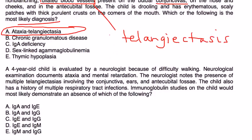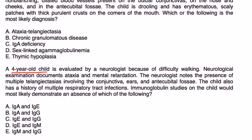And then finally, a four-year-old child is evaluated by a neurologist because of difficulty walking. Neurologic exam documents ataxia, mental retardation. The neurologist notes the presence of multiple telangiectasias involving the conjunctiva, ears, and antecubital fossa. The child also has a history of multiple respiratory tract infections. Immunoglobulin studies on the child would most likely demonstrate an absence of which of the following?